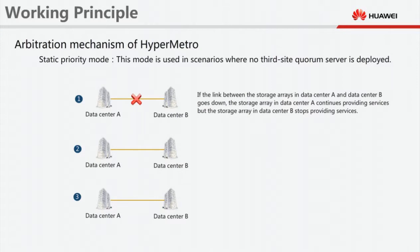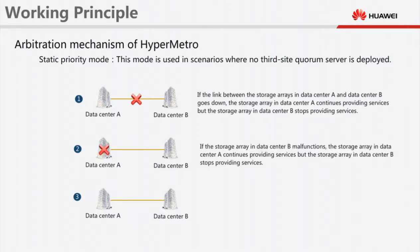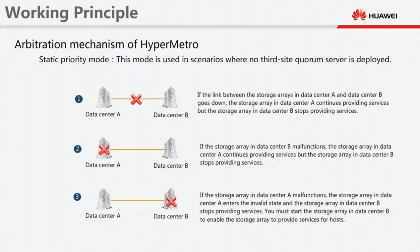Static priority mode is used in scenarios where no third-site quorum server is deployed. If the link between the storage arrays in data center A and data center B goes down, the storage array in data center A continues providing services, but the storage array in data center B stops providing services. If the storage array in data center B malfunctions, the storage array in data center A continues providing services. If the storage array in data center A malfunctions, it enters the invalid state and the storage array in data center B stops providing services. You must manually start the storage array in data center B to enable it to provide services for hosts.